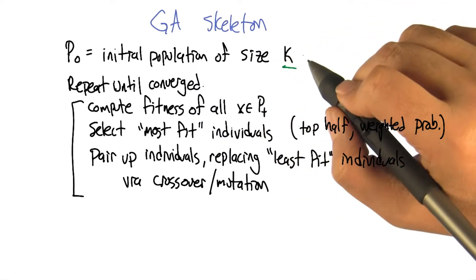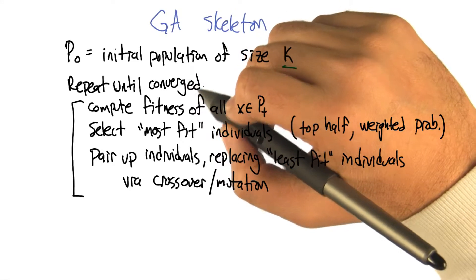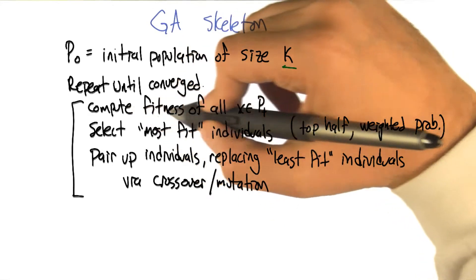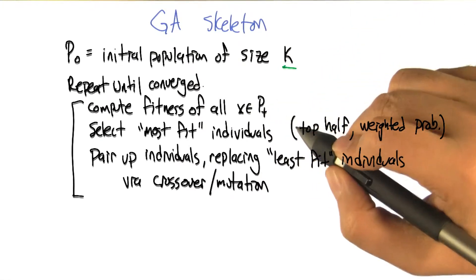So we just generate a bunch of random individuals to get things started. Then what we're going to do is repeat until essentially things converge. We're going to compute the fitness of all the individuals in the population.